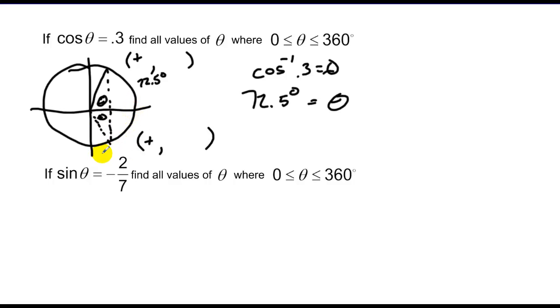They want it between 0 and 360 degrees, so I have to subtract from 360, 72.5. And when I do that I get 287.5 degrees. Again your calculator is not going to give you that second one because it only gives you one y value for each x.